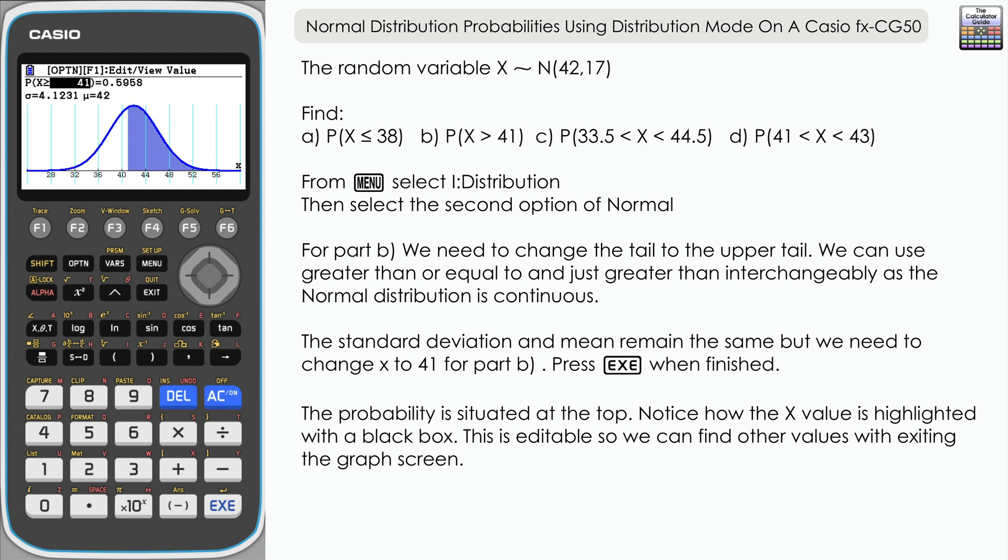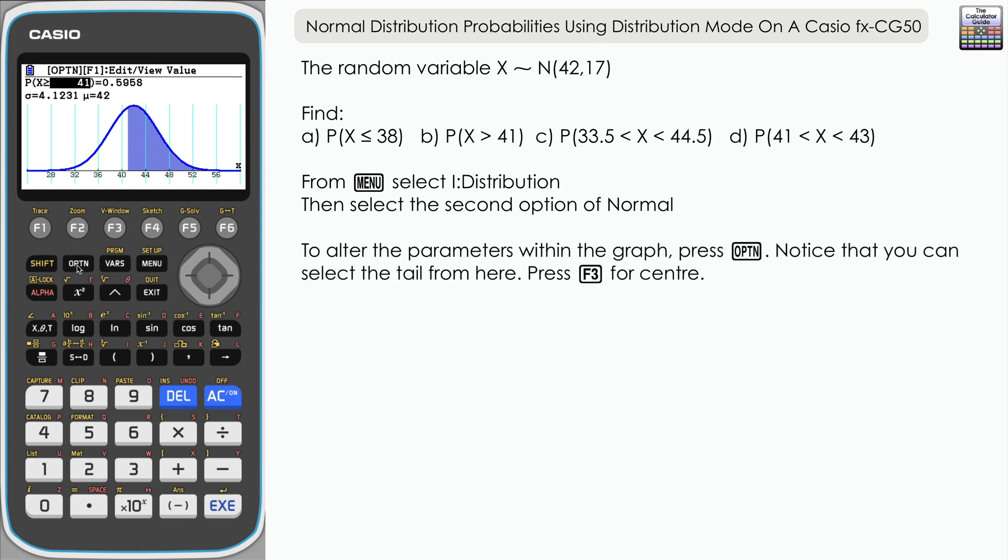We can change the type of region that we're looking for within this graph function. If we press option and then look at part C, we've got an upper and lower bound, so we're looking for a central region.